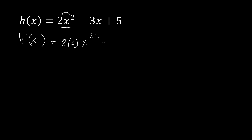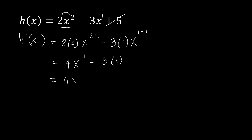Then we have minus 3x — that's a combination of constant multiple and power rule. Copy the constant, and x has an exponent of 1, so bring it down and multiply with the constant: 3 times 1. Then x to the power of 1 minus 1. The constant 5 gives a derivative of 0, so we don't write anything. This gives us 2 times 2 equals 4, x to the power of 1; minus 3 times 1 equals 3, x to the power of 0, which is automatically 1. So we have times 1, giving us 4x minus 3.